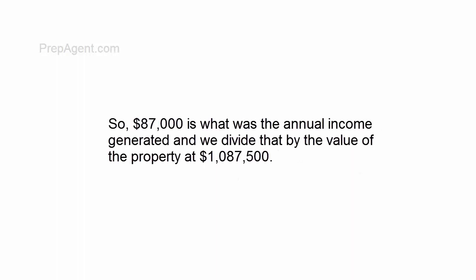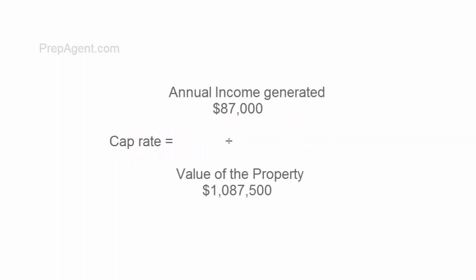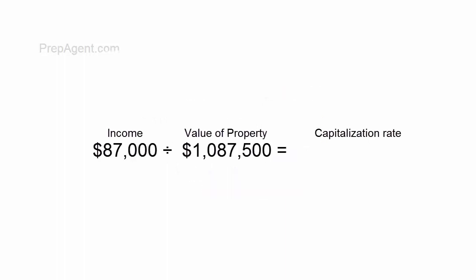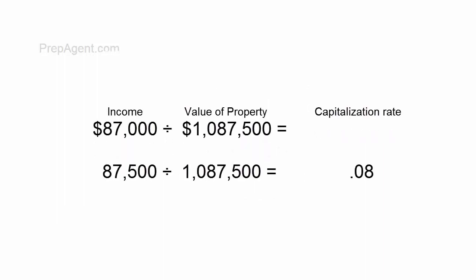$87,000 is the annual income, and we divide it by the value of the property at $1,087,500. $87,000 divided by $1,087,500 will give you the capitalization rate of 0.08.